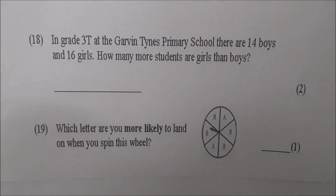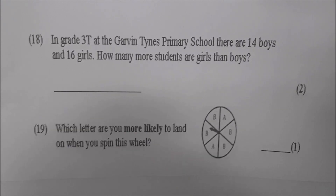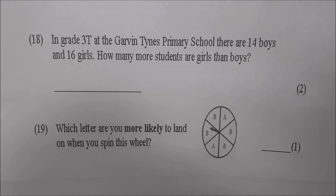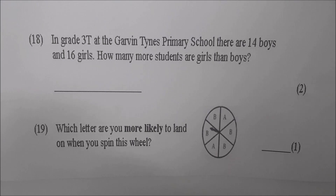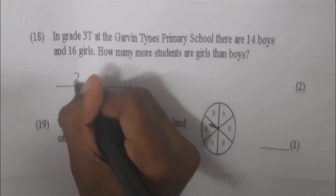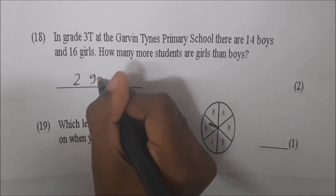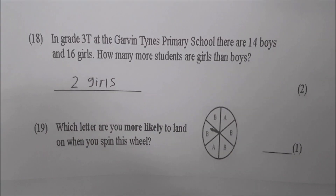Okay Sky, read number eighteen. In Grade 3 at the Garvin Times Primary School there are fourteen boys and sixteen girls. How many more students are girls than boys? It's two. How do you get that answer, Sky? I take fourteen from sixteen. So it's sixteen take away fourteen. Put two on the line — two more girls. So there are two more girls than boys. Very good.